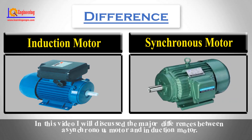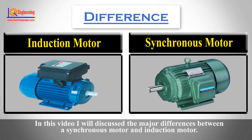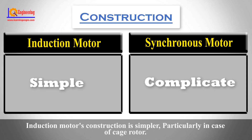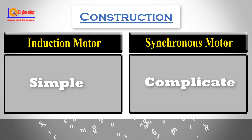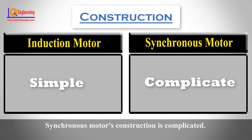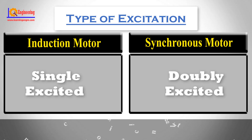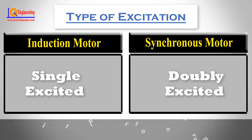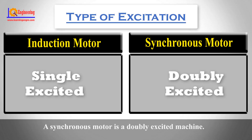In this video, I will discuss the major differences between a synchronous motor and an induction motor. An induction motor's construction is simpler, particularly in the case of a cage rotor, while a synchronous motor's construction is more complicated. An induction motor is a single excited machine, whereas a synchronous motor is a doubly excited machine.